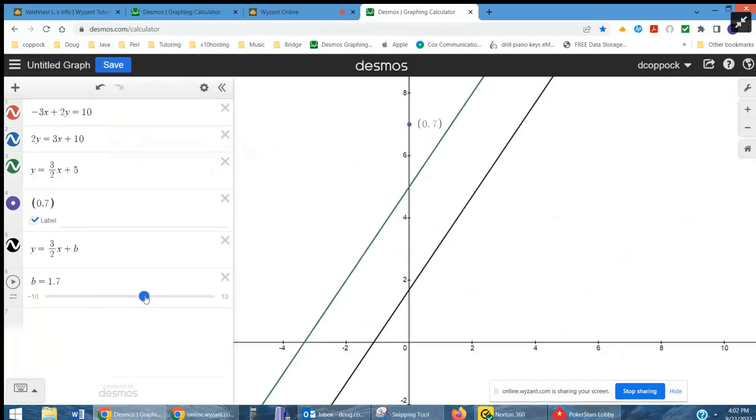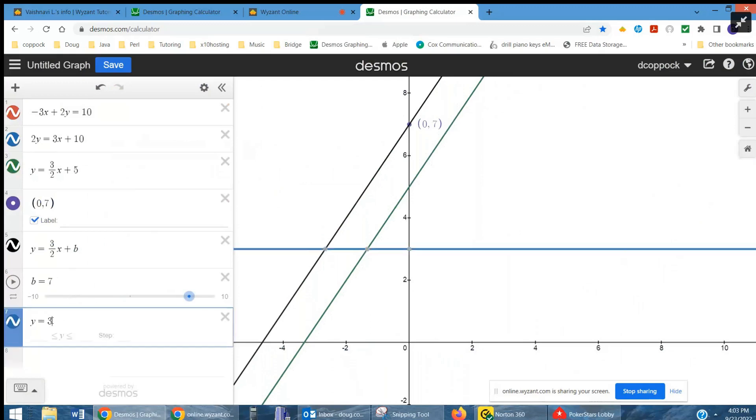Let's actually go to Desmos and see it happening. So here I am as I'm changing the value of b, and you can see the black line is parallel to the green line. And when I get b to actually be right at 7, the black line passes through the point 0, 7.